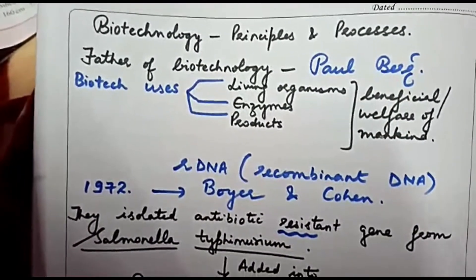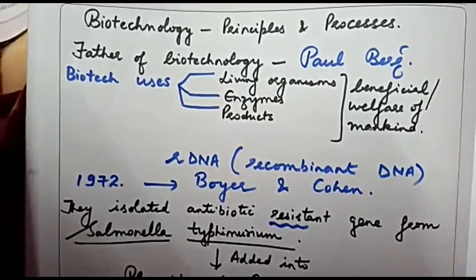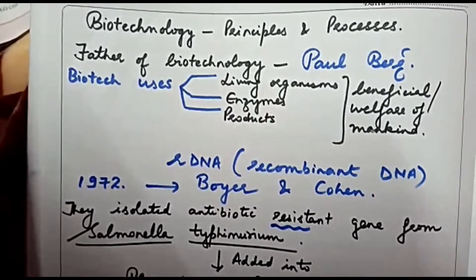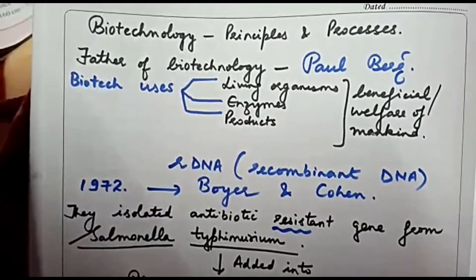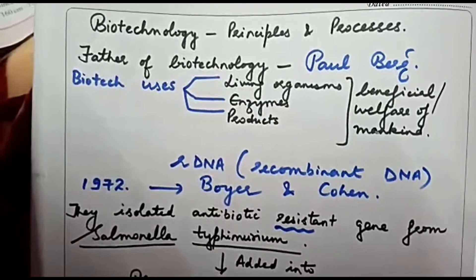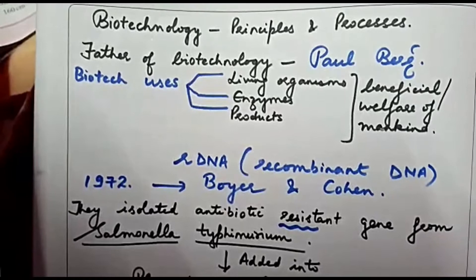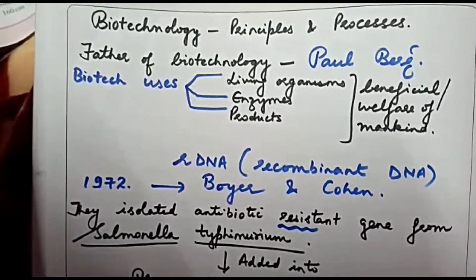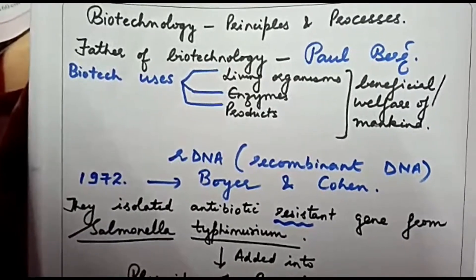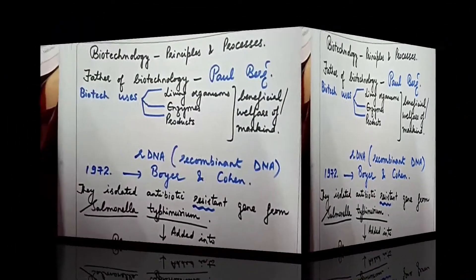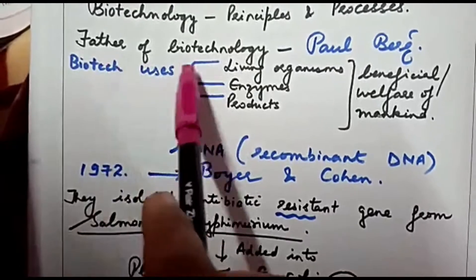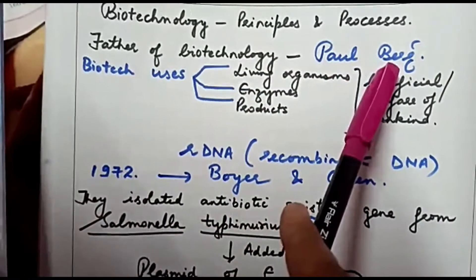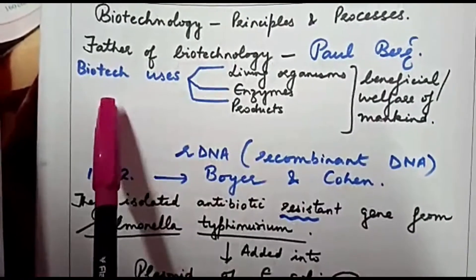Today we will discuss Unit 3, which is regarding biotechnology. There are two chapters in this unit. The first chapter we will discuss is Biotechnology: Principles and Processes. First of all, we will try to know who was the father of biotech — the father of biotech was Paul Berg.